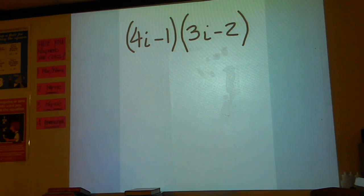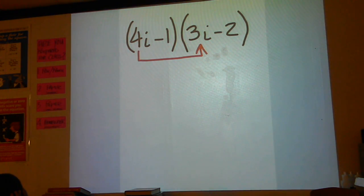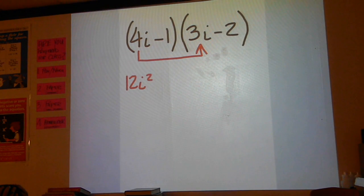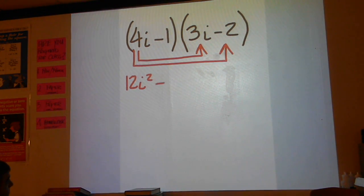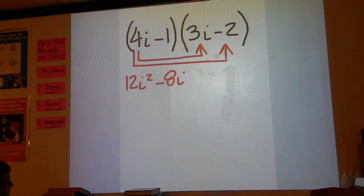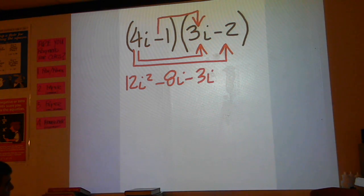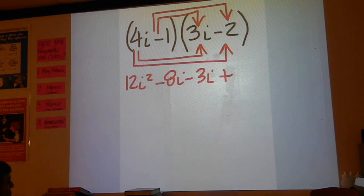We'll start with 4i and go to 3i. That'll give us 12i squared, and then 4i times the minus 2, that's minus 8i. Minus 1 times 3i is minus 3i, and minus 1 times minus 2 is plus 2.